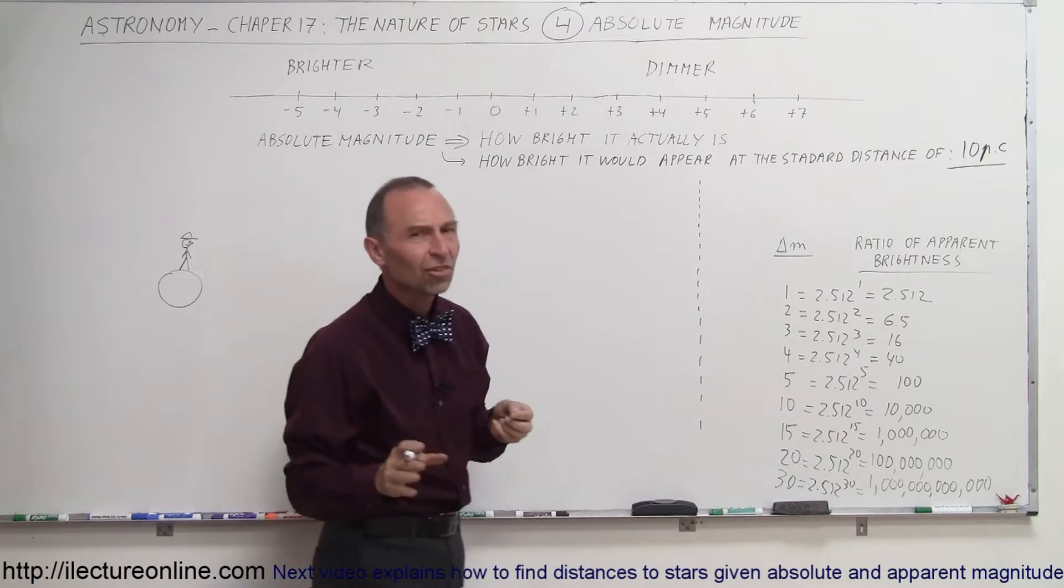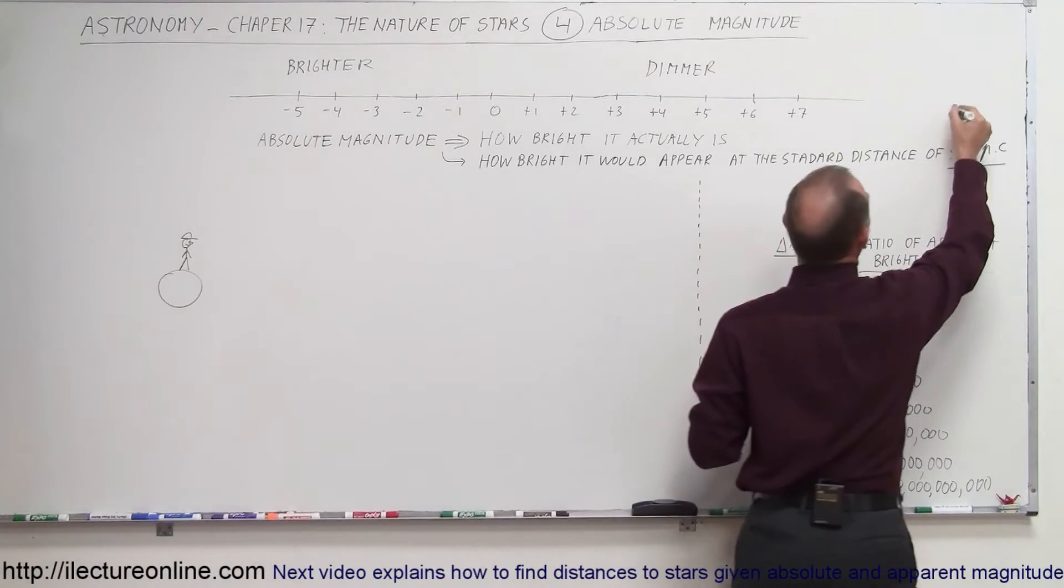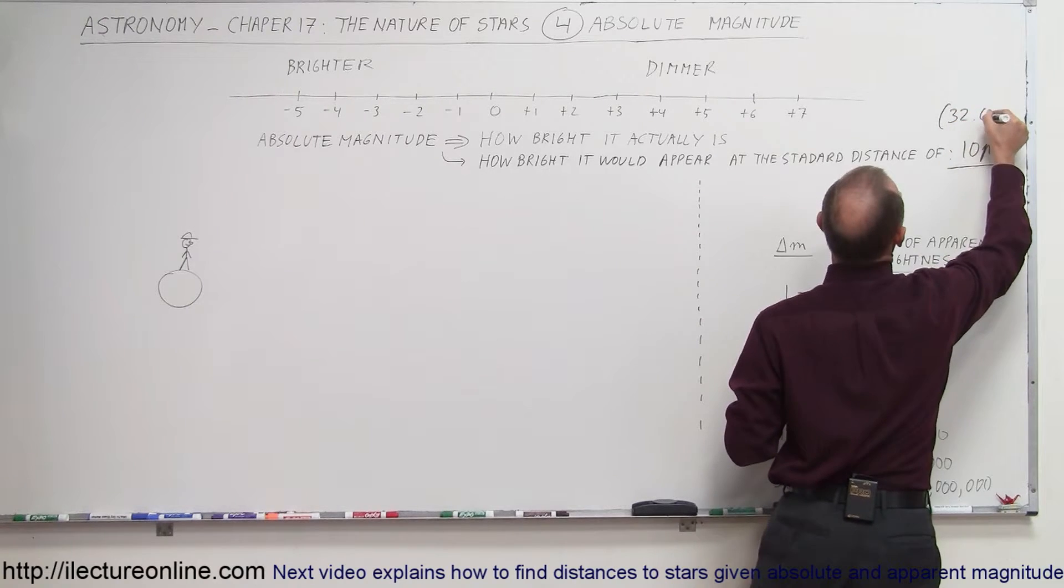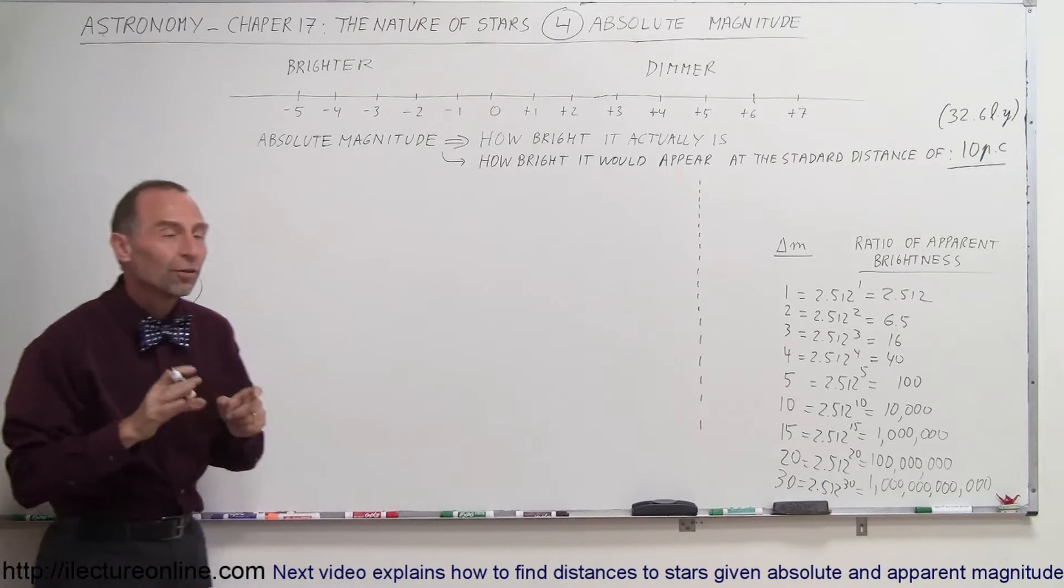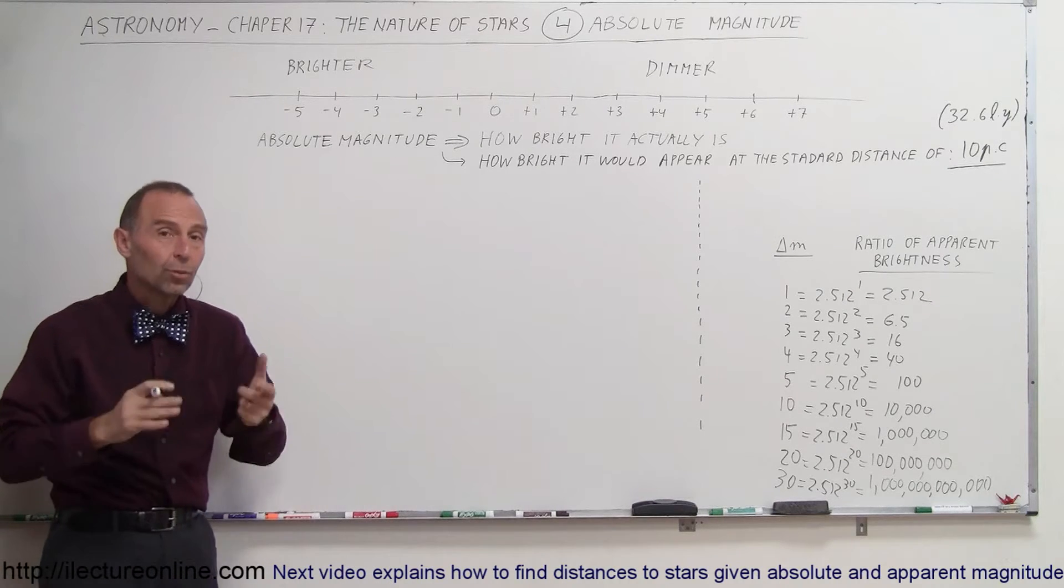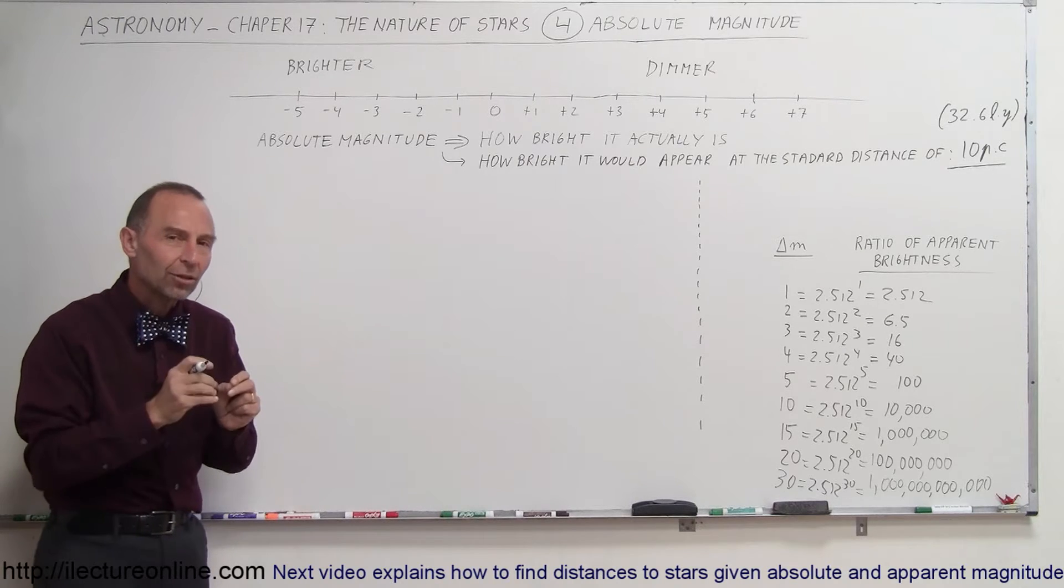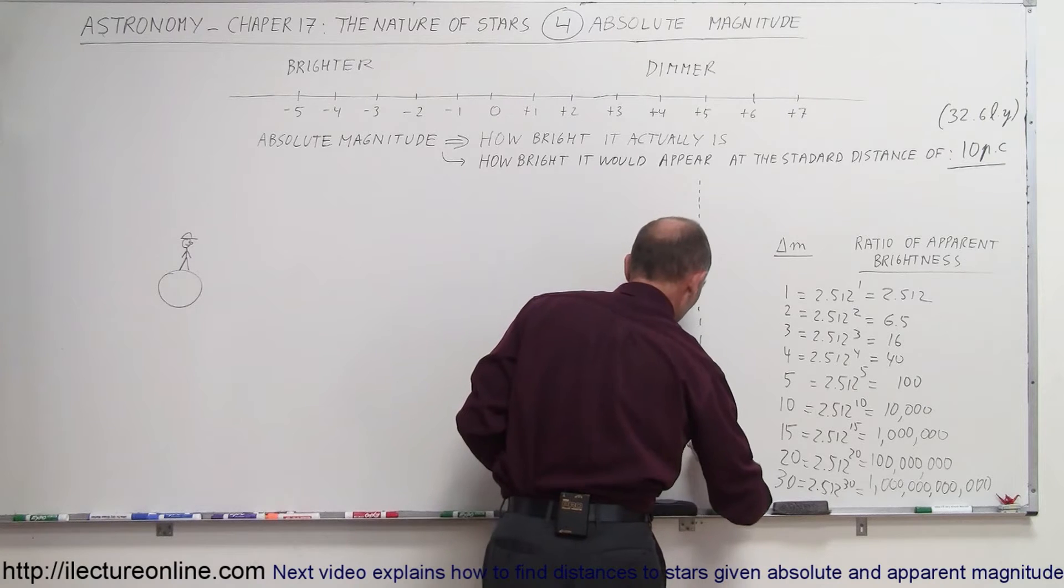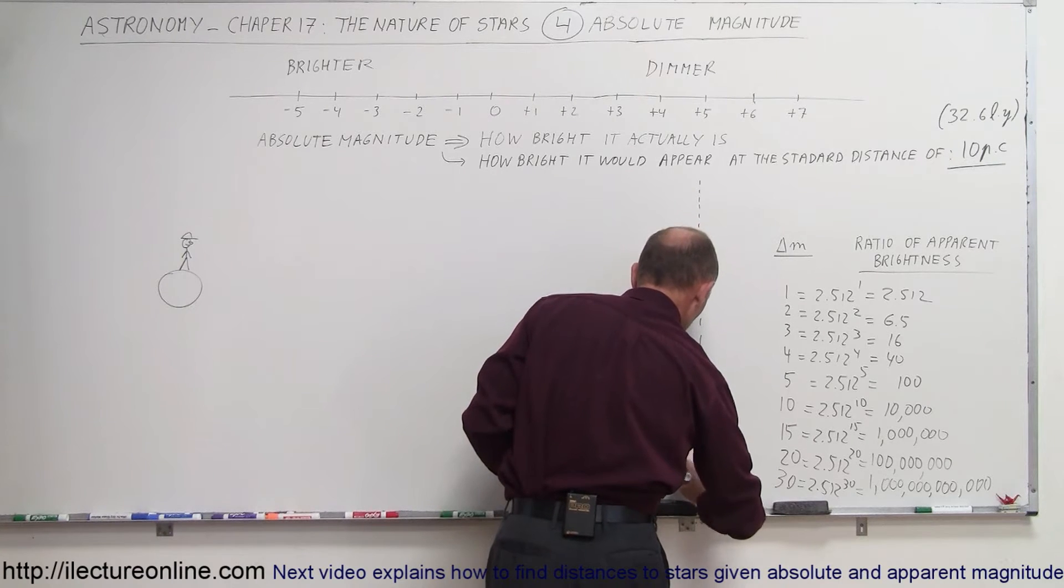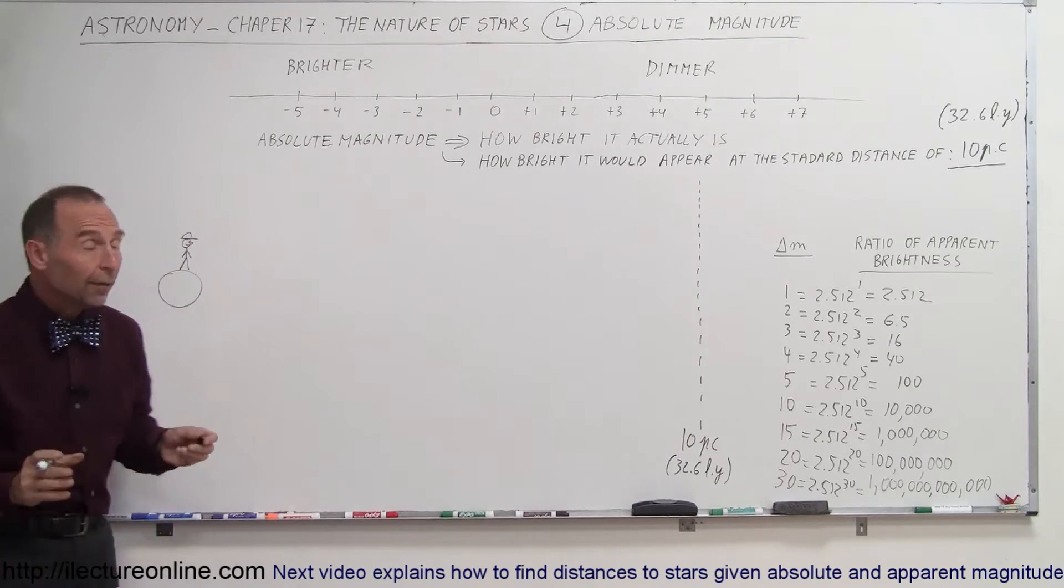Now, of course, 10 parsecs, since each parsec is 3.26 light years, that would be the same as 32.6 light years. So, the absolute magnitude of an object, of a star, a galaxy, whatever we may be looking at, is equal to the apparent brightness if we place the object at a distance of 10 parsecs, or 32.6 light years.